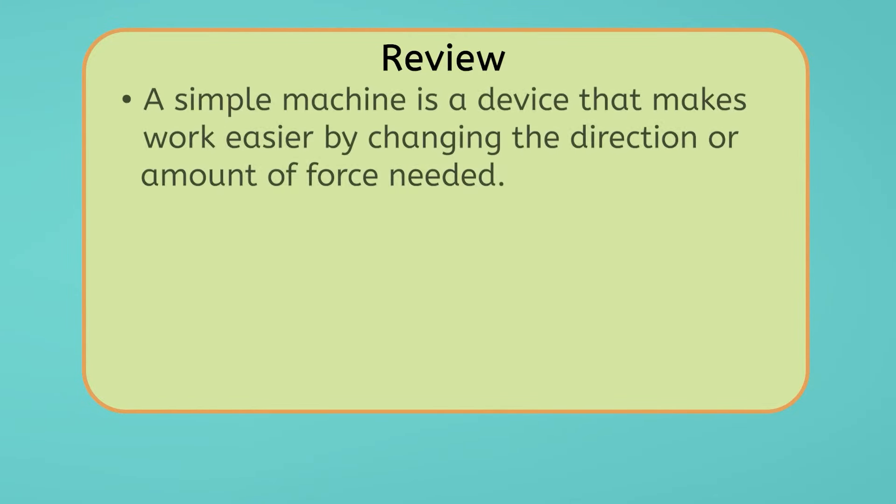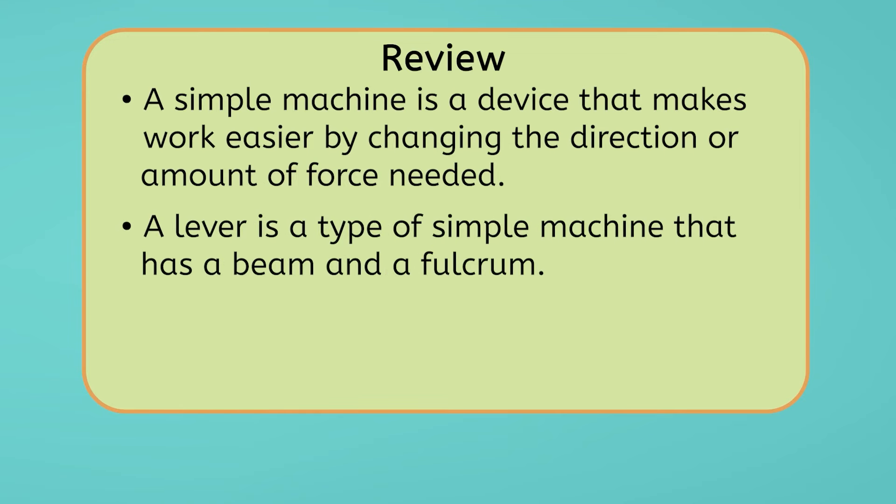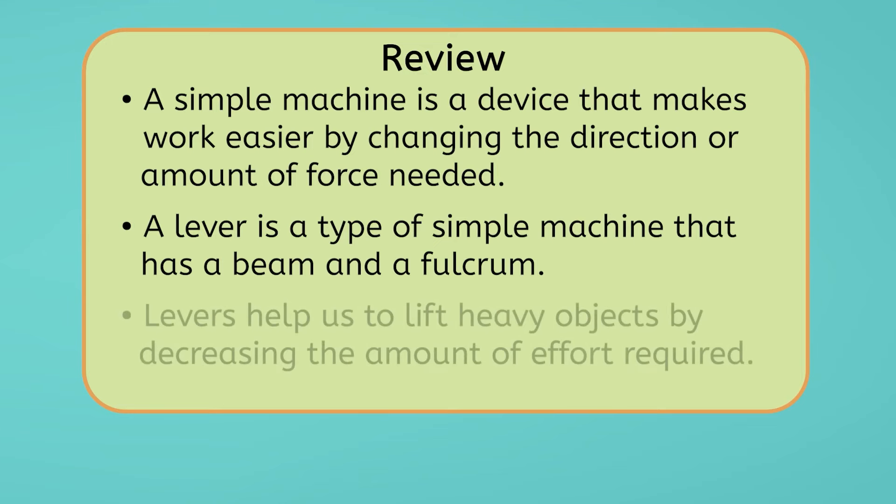Those ancient Egyptians were pretty clever. Let's review everything we've learned today about simple machines. A simple machine is a device that makes work easier by changing the direction or amount of force needed. A lever is a type of simple machine that has a beam and a fulcrum. Levers help us lift heavy objects by decreasing the amount of effort required.